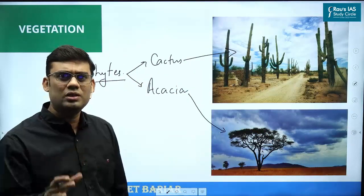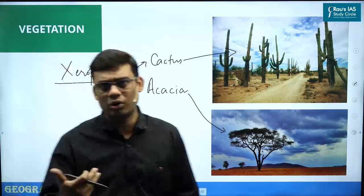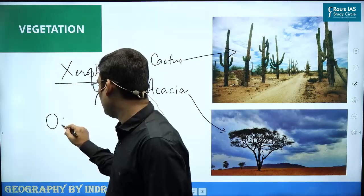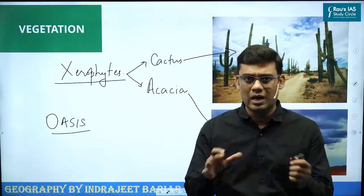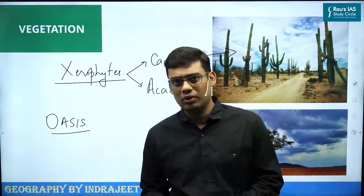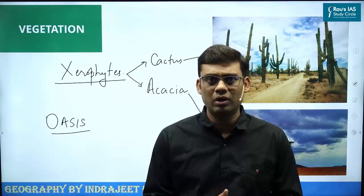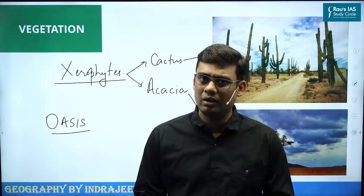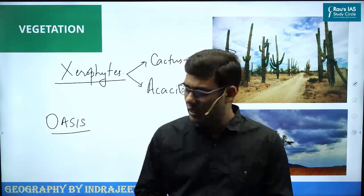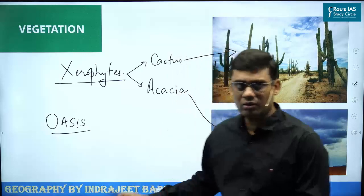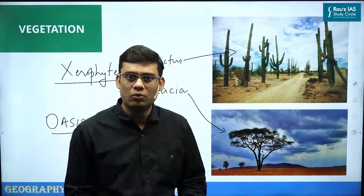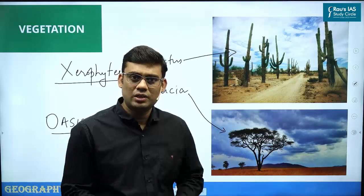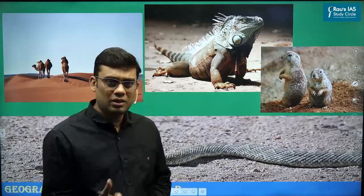In certain areas there is water, which we term as oasis. In oasis regions, we find palm and date trees, but that is limited to the oasis part. The rest of the desert region has xerophytes. That covers the vegetation aspect.